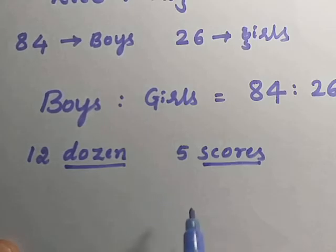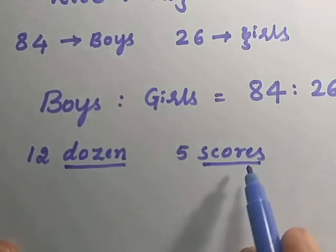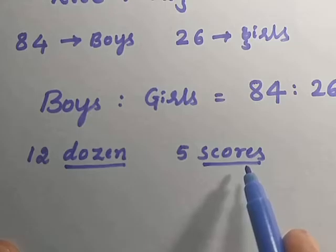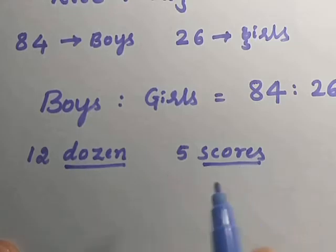Comparison of the quantities is possible only when both quantities are expressed in the same unit. Since here is dozen and here is a score, it is not possible that they can be compared like 12 is to 5. It is not possible.